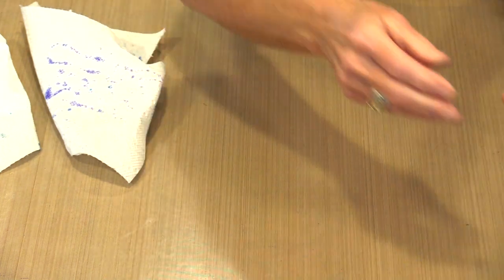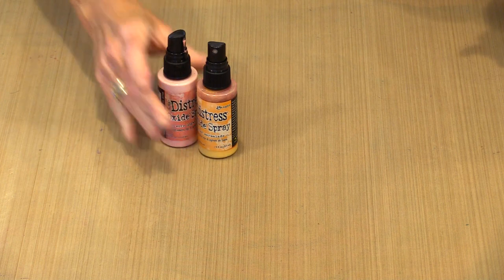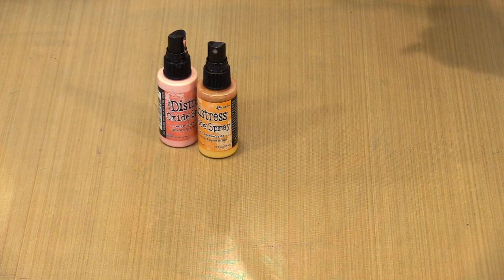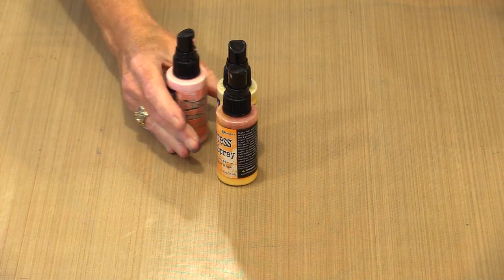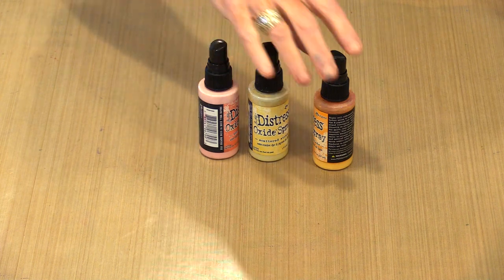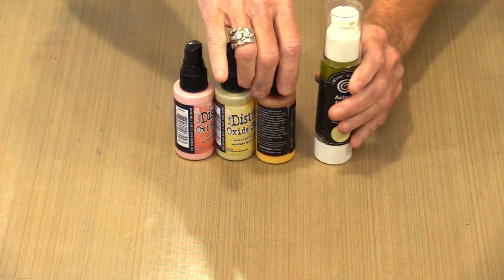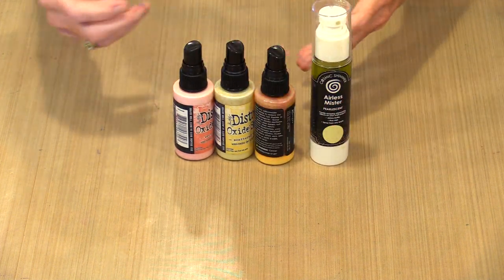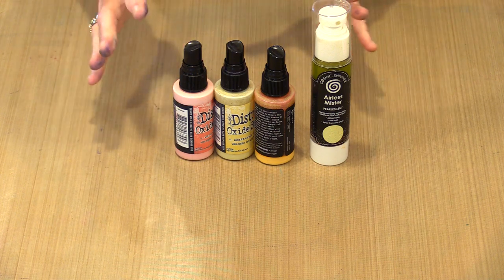Now something else that I like to do, and I'm just going to put this stencil over there and get it out of the way. Something else that I like to do, and I'm going to bring in Hello Sunshine and start shaking, is I like to mix colors. I like to mix things like Distress Oxide sprays with mica powder, or excuse me, mica shimmer sprays like this because I think it creates a really interesting look.